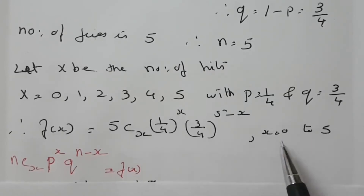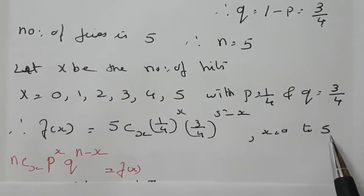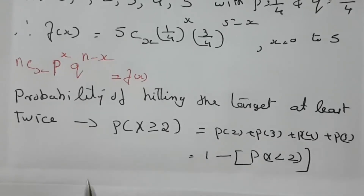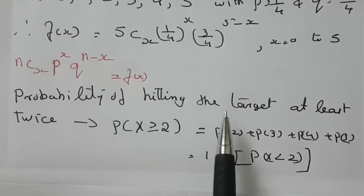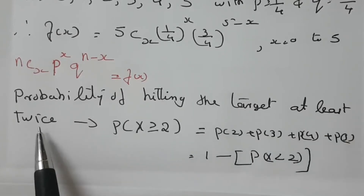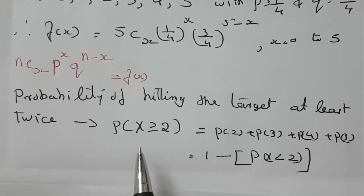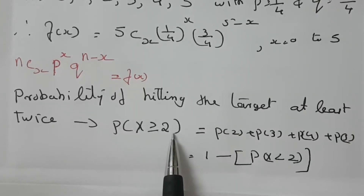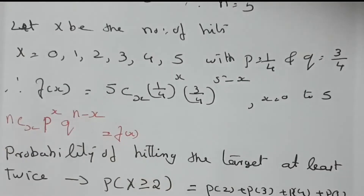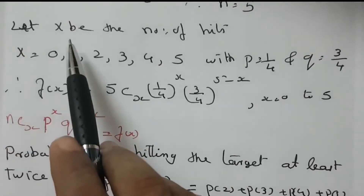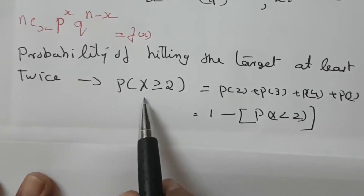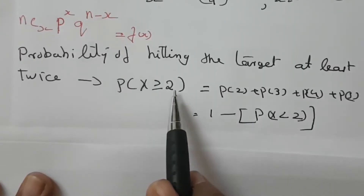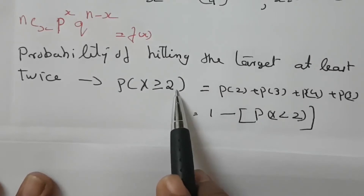Now let us consider the first question: the probability of hitting the target at least twice. That can be rewritten as P(X ≥ 2), where x is the number of hits, which can vary from 0 to 5. Here we are going to find the probability of X greater than or equal to 2.